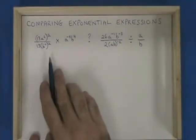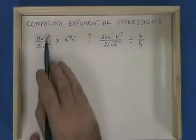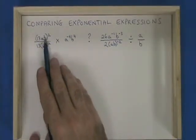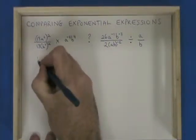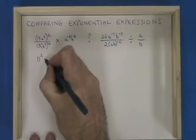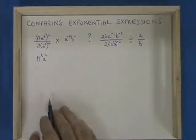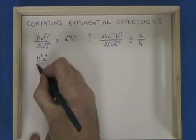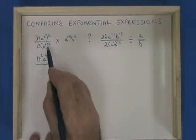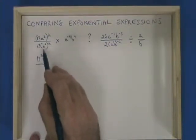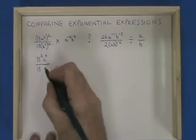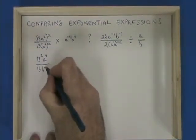On the left side, I'm going to apply this power of 2 to the contents of the bracket, and I get 13 squared, a to the power of 4. On the bottom, the power of 2 is applied just to the b squared, so I have a 13, and b squared squared is b to the 4.